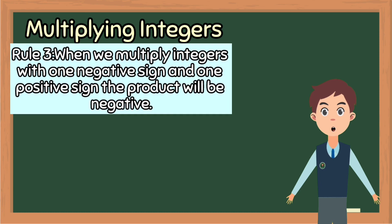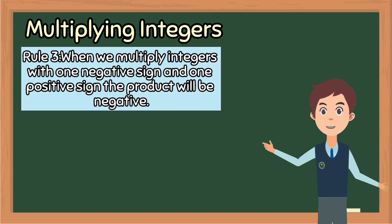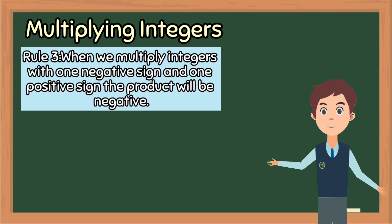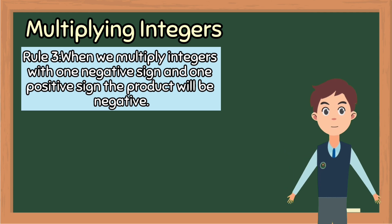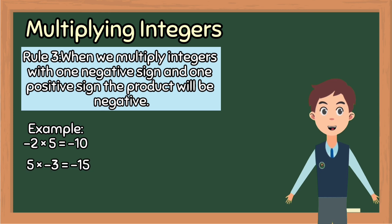Rule number three: when we multiply integers with one negative sign and one positive sign, negative times positive equals negative. For example, negative 2 times positive 5 is equal to negative 10. Another example, positive 5 times negative 3 is equal to negative 15.